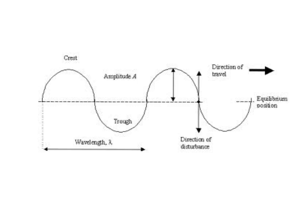The first type of wave we're going to look at is called a transverse wave. Transverse waves have a very distinct pattern — they go up and down. Most waves you would probably have seen in the past, such as waves on water, have this particular pattern, but there is another type of wave which we'll look at in a minute or two.